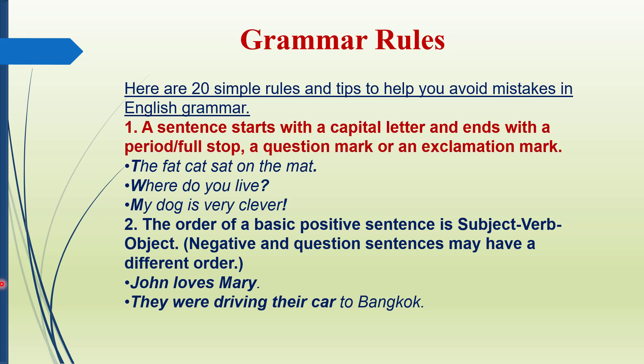Number 1: A sentence starts with a capital letter and ends with a period or full stop. The sentence starts with a capital letter — you will always remember to start with a capital letter, or an exclamation mark. Here are the examples. You can see 'The fat cat sat on the mat.' You can see the dot here — it is called period or full stop, and T is capital, this is the beginning of the sentence.